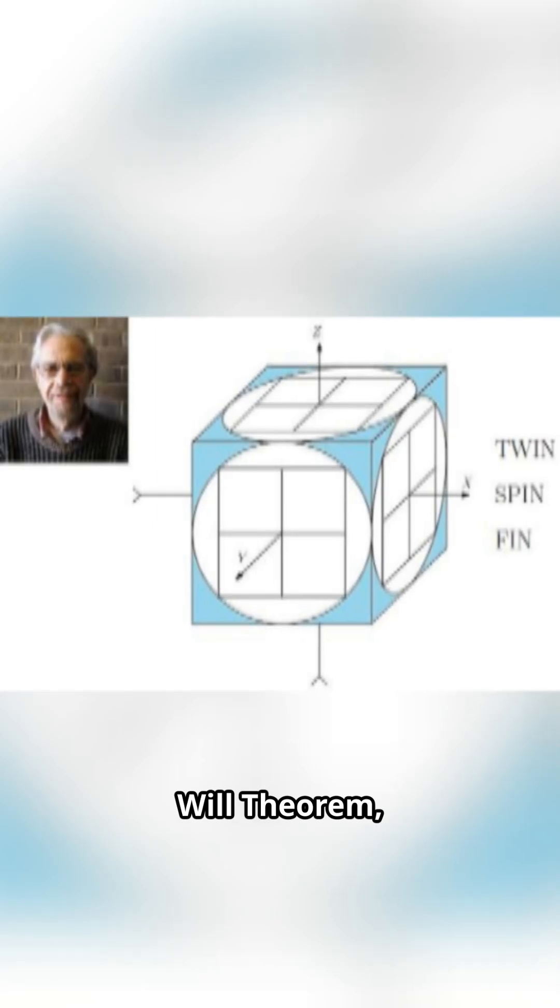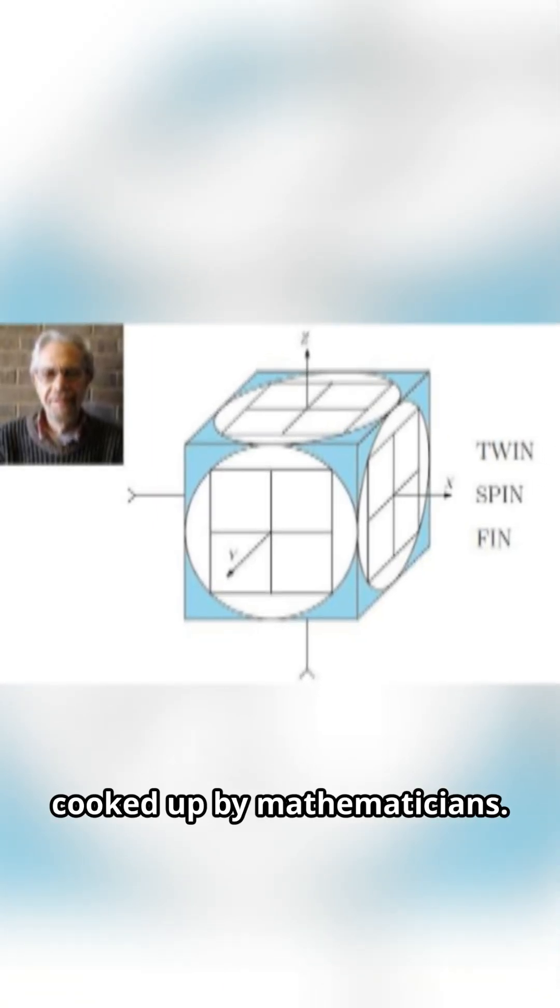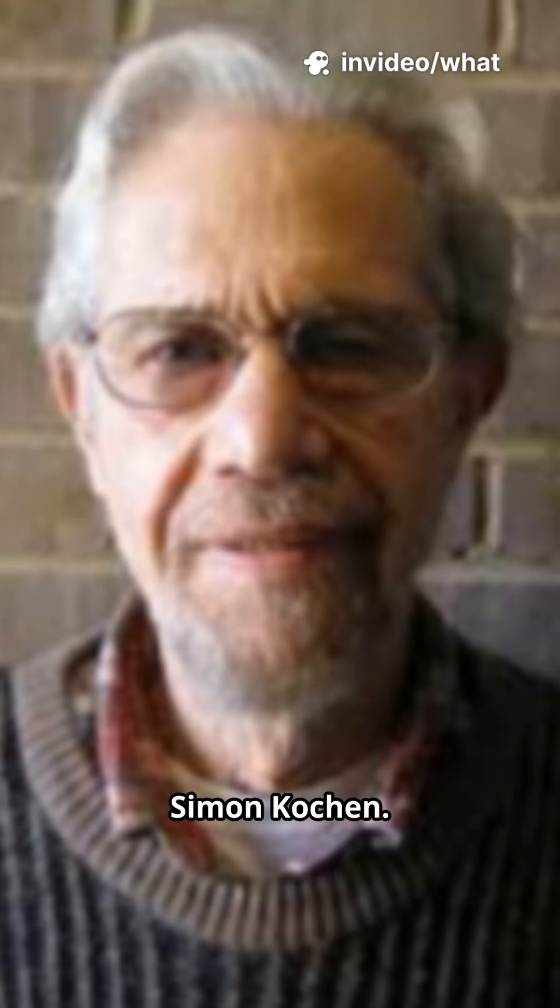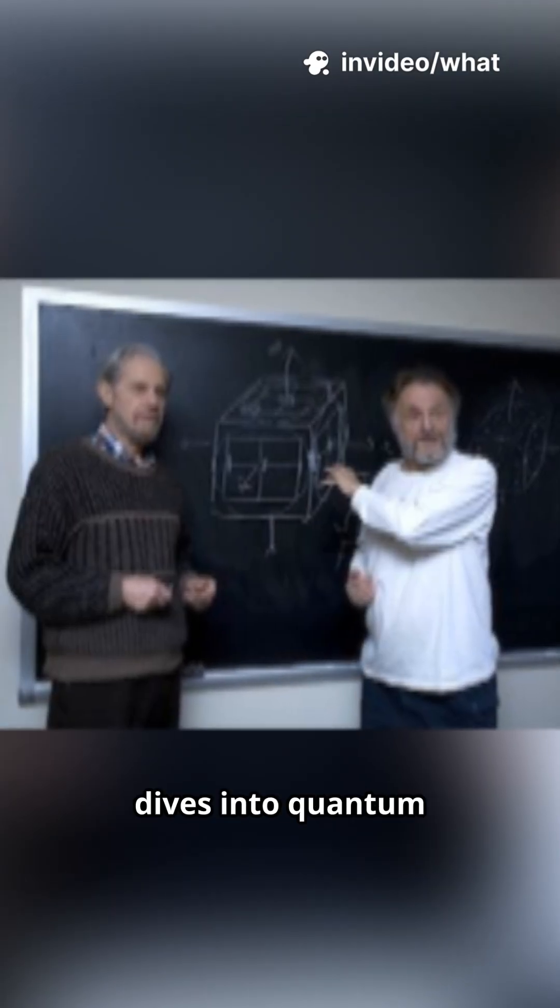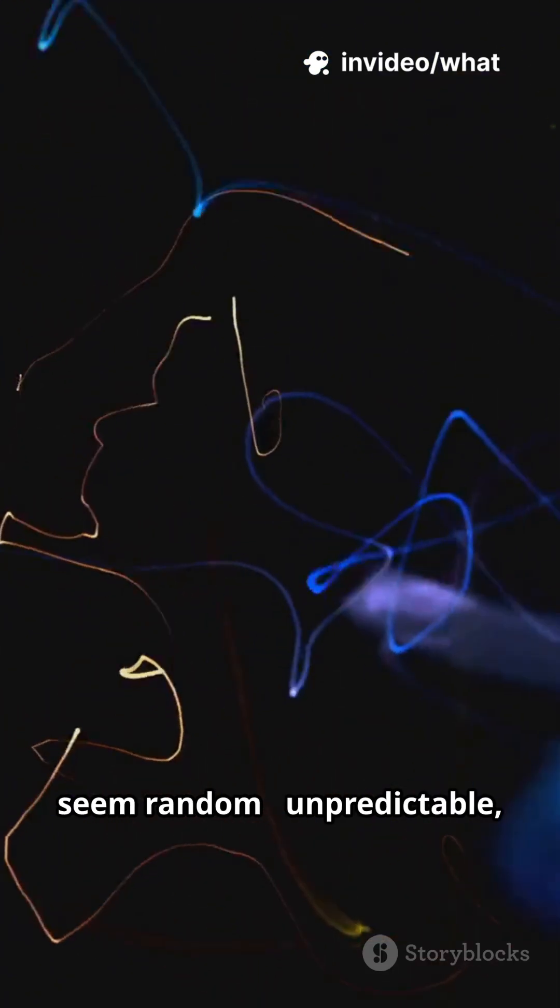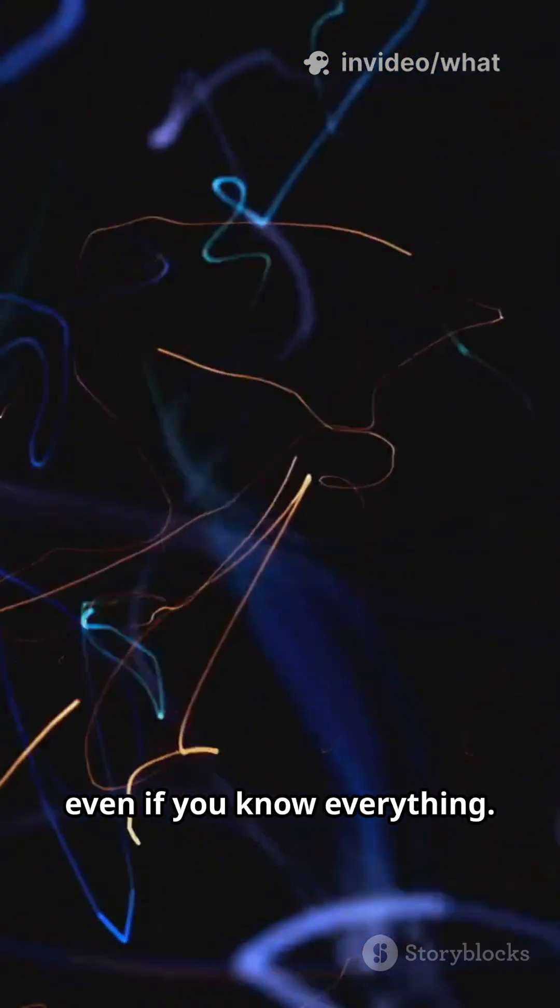Enter the free will theorem, cooked up by mathematicians John Conway and Simon Coshin. Their research dives into quantum experiments. Outcomes seem random, unpredictable, even if you know everything.